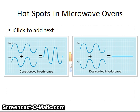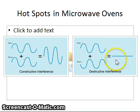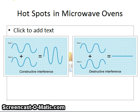Where the waves add together, the waves have twice the energy, whereas where they cancel out, they have no energy whatsoever. In other places where they're semi-aligned, you get semi additions or semi removals of energy. Those places with no energy are the dead spots in microwaves, and the high-energy places are the hot spots, which is really what causes the hot spots to occur in microwaves.